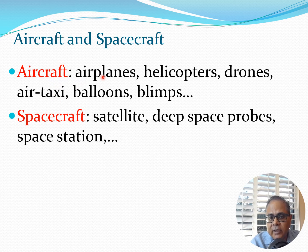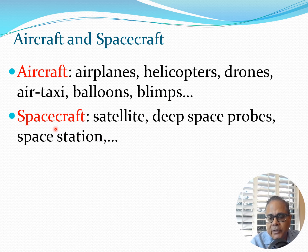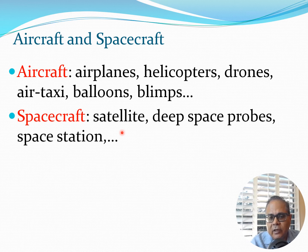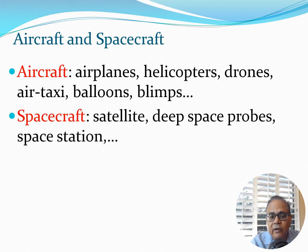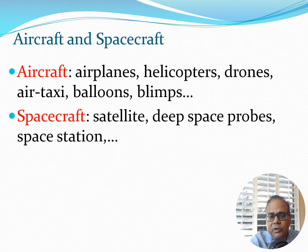We can divide flight vehicles into two parts: aircraft and spacecraft. Aircraft include airplanes, helicopters, drones, air taxis, balloons, blimps, and airships — vehicles which fly through the air. Spacecraft may never go through air; for example, satellites circling the Earth support systems like GPS, communications, and satellite internet. Deep space probes are sent to Mars, Jupiter, and beyond, and there are also space stations where people live and conduct scientific activities.